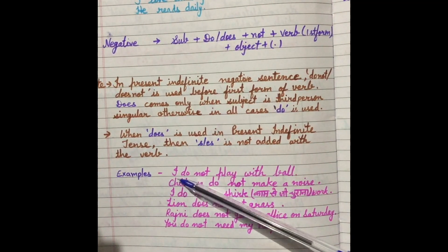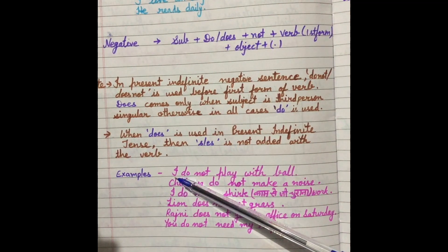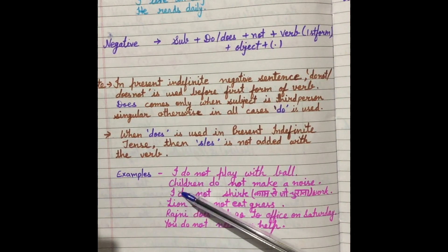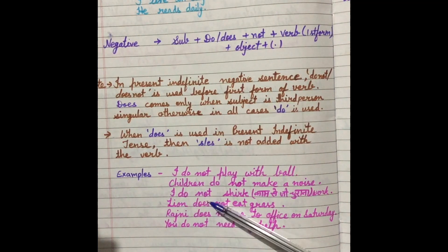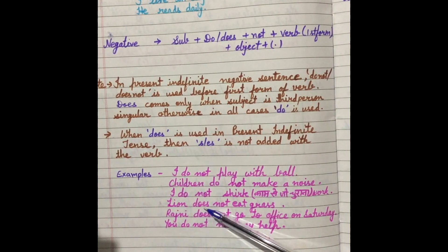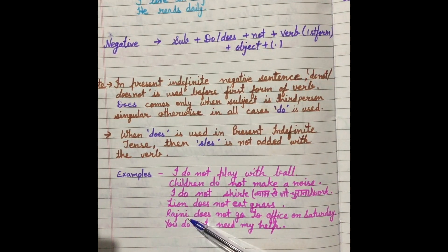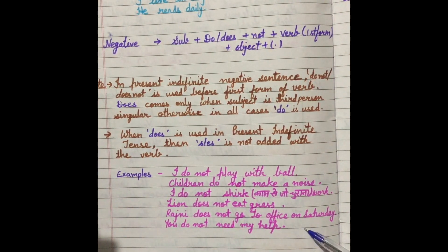Let's see some examples. I do not play with ball. Children do not make a noise. I do not shirk work. Lion does not eat grass — lion is third person singular, so we put does not. Rajini does not go to office on Saturday — Rajini is also third person singular, so we use does not. You do not need my help.